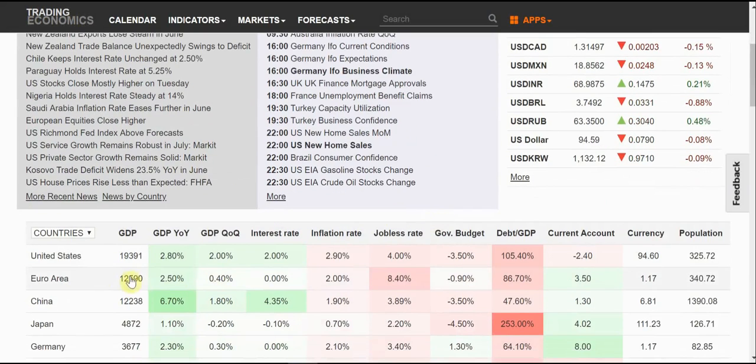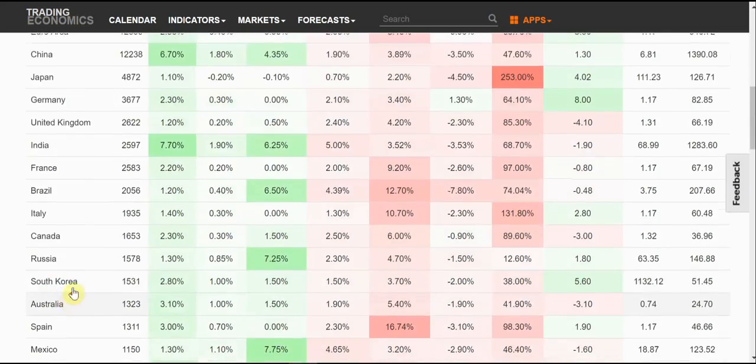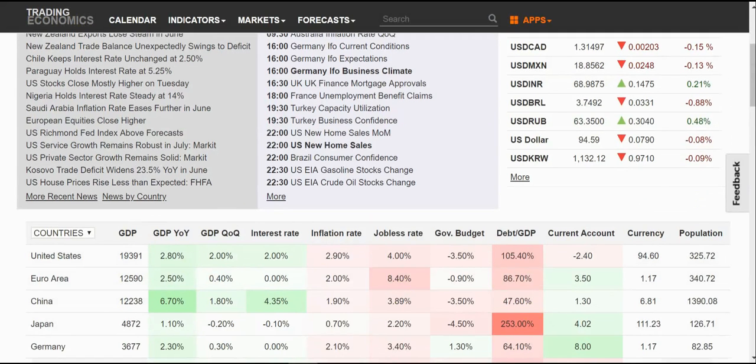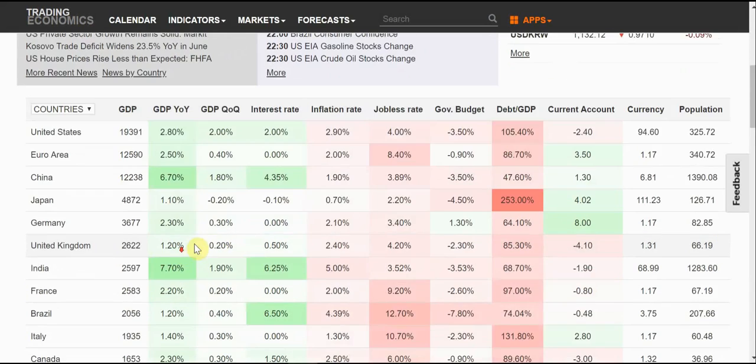You can see you can compare across all the various countries their economic data at one glance on this homepage. These are the major indicators that we all see from our newspaper and from the websites. You can see that you have GDP data year-on-year, quarter-on-quarter. What's the difference between year-on-year and quarter-on-quarter?